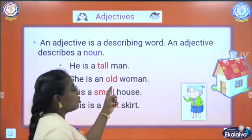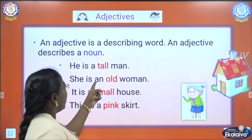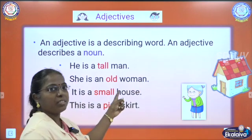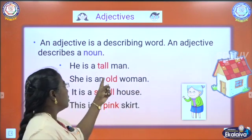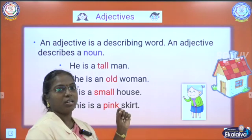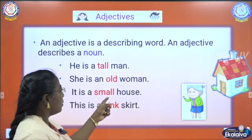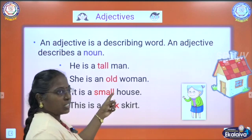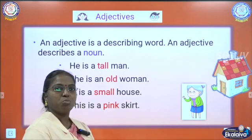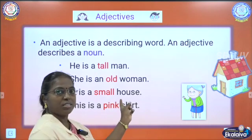Example: he is a tall man. Which is noun here? Man is a noun. And tall man — we are describing about the noun man, whether the man is short or tall. So tall is an adjective. And she is an old woman — whether the woman is old or young, we are describing about the woman, so old is an adjective. And it is a small house — whether the house is small or big or large, we are describing, so small is an adjective.